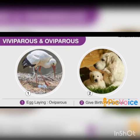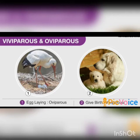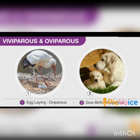Some animals give birth to young ones while some animals lay eggs, which later develop into young ones. The animals which give birth to young ones are called viviparous. Examples of viviparous animals include cow, tiger, lion, and even human beings. Those animals which lay eggs are called oviparous animals. Examples of oviparous animals include birds, reptiles, fish, etc.